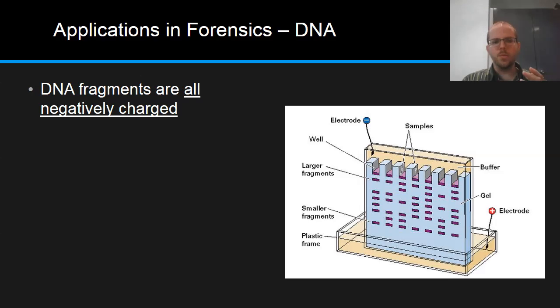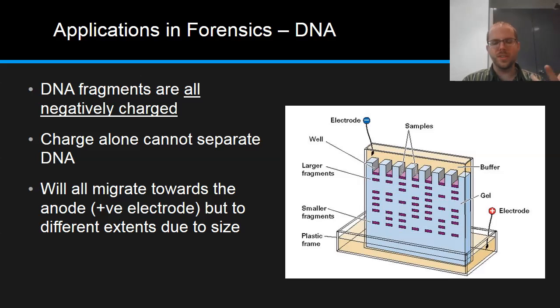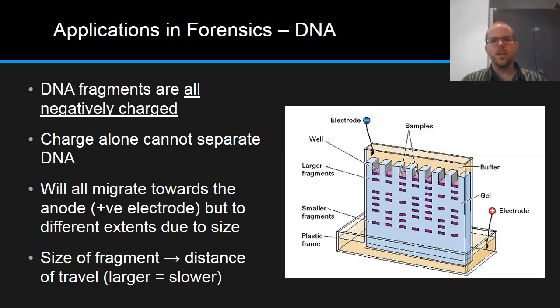Because ultimately, DNA fragments, once we break it into sections, are all negatively charged. So that means that charge alone cannot separate DNA. Unlike with amino acids, where they may have different charges, when they all have the same type of charge, they will all migrate towards the anode, the positive electrode. But the thing is that because we have fragments of different size and length, they will migrate to different extents due to that size. The size of the fragment will dictate the distance it travels. The larger the fragment is, the slower it will travel in a given timeframe. And so that's the basis that we can separate the fragments of DNA.